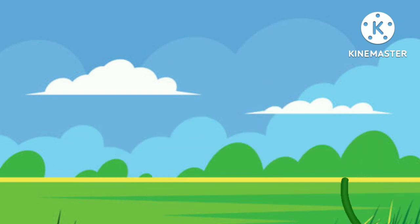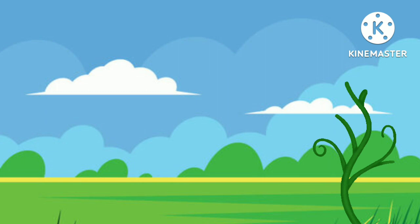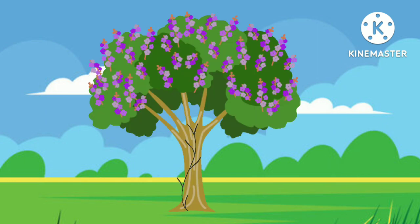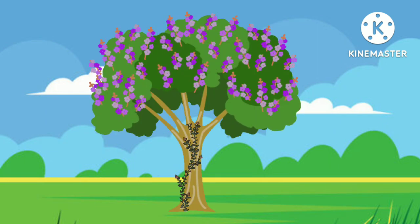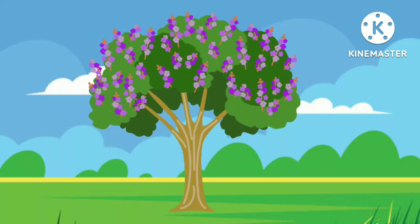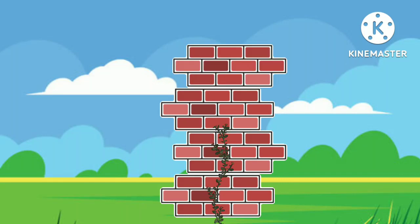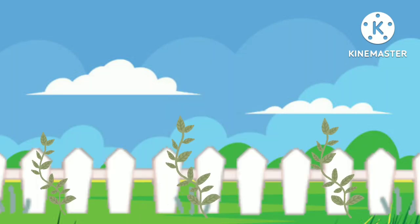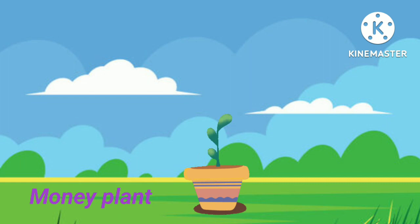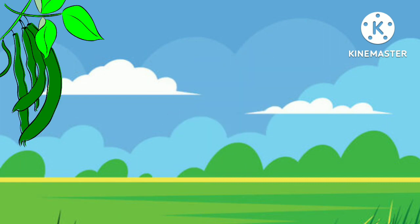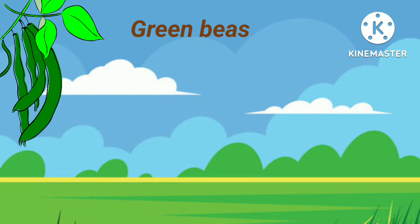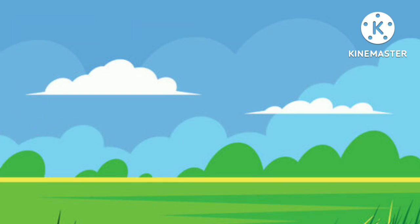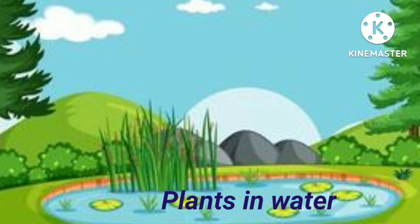Climbers. Climbers are small plants with a soft and weak stem. They need the support of other plants, a wall, or a fence to grow. Money plant and green peas are some examples of climbers.